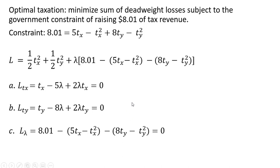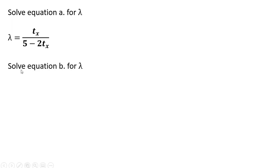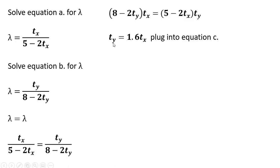We have three equations and three unknowns: lambda, the tax in the market for good X, and the tax in the market for good Y. First, I'll solve the first equation for lambda. Then I'll solve equation B for lambda, and set those two lambda expressions equal to one another. Cross-multiplying the denominator terms and solving for the tax in the market for good Y, we get this result.